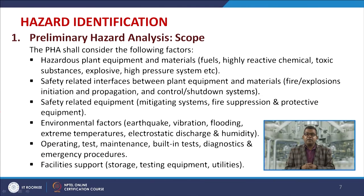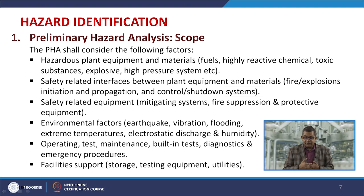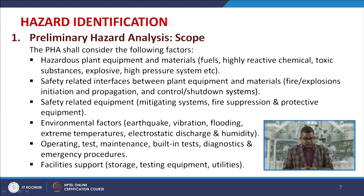The scope of preliminary hazard analysis considers factors such as hazardous plant equipment and materials like fuel, highly reactive chemicals, toxic substances, explosives, and high-pressure systems. It also covers safety-related interfaces between plant equipment and materials, examples being fire explosion initiation, propagation, and controlled shutdown systems, as well as safety-related equipment like fire suppression and protective equipment. Environmental factors such as earthquake, vibration, flooding, extreme temperatures, electrostatic discharge, and humidity are also considered.